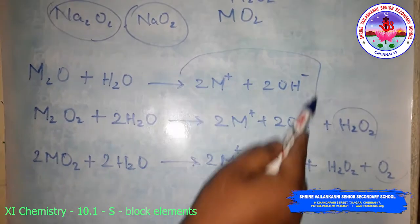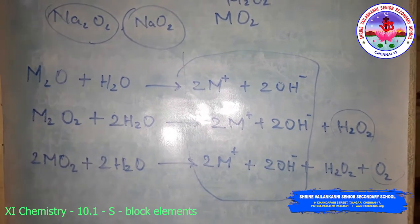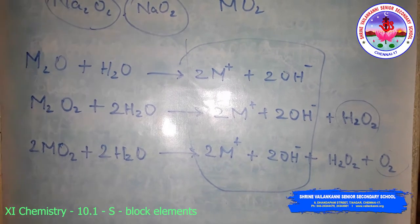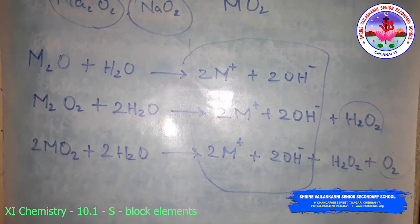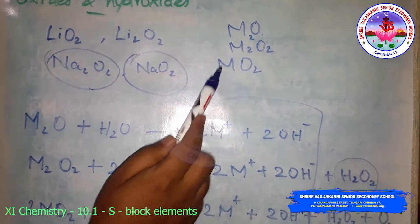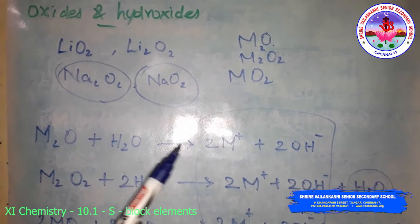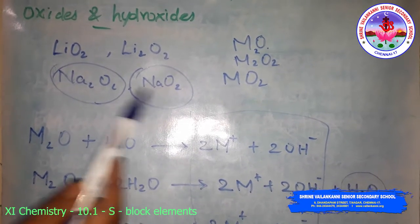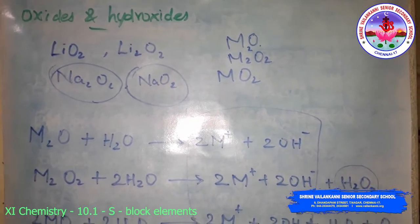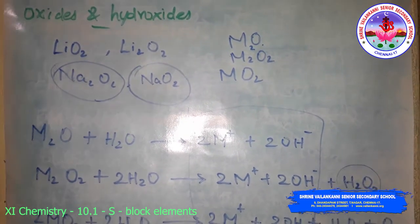Generally, bases are produced — that is, metal hydroxides are produced. The oxides and peroxides are colorless, but the superoxides are yellow or orange in color. The superoxide shows paramagnetic behavior. Sodium peroxide is widely used as an oxidizing agent in inorganic chemistry.